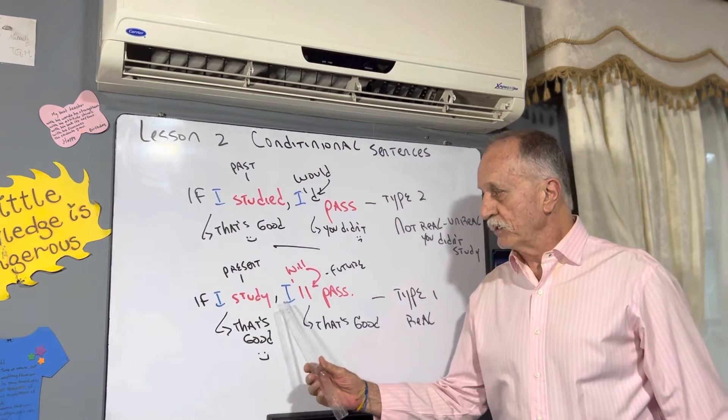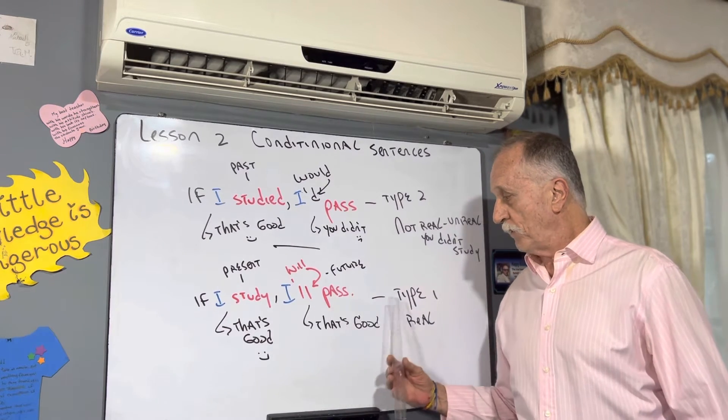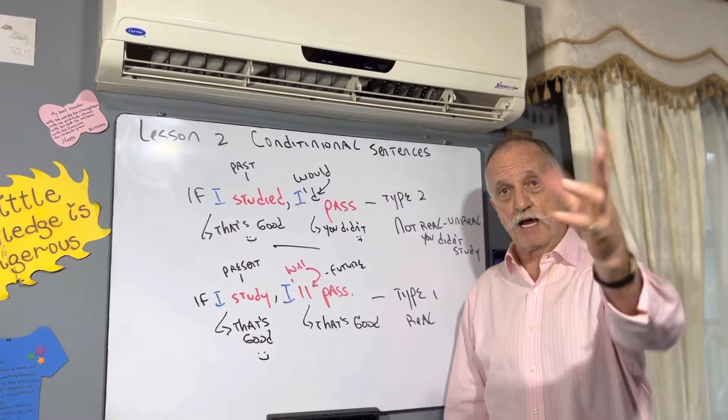If subject present, comma, subject will or won't with verbal, complemento, that's good. Today, two, type two.